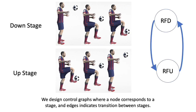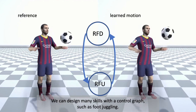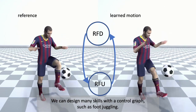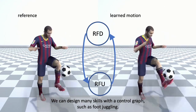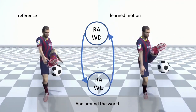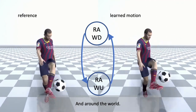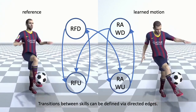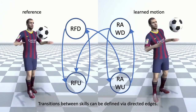We design control graphs where a control node corresponds to a stage, and edges indicate transitions between stages. We can design many skills with a control graph, such as foot juggling and around the world. Transitions between skills can be defined via directed edges.